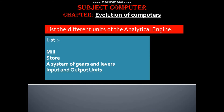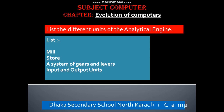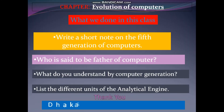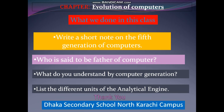The different units of the analytical engine include: the store, a system of gears and levers, and input and output units. We have covered in this class a short note on the fifth generation of computer.